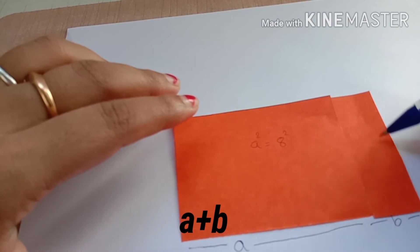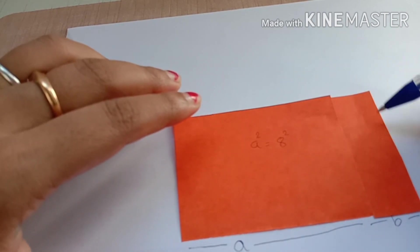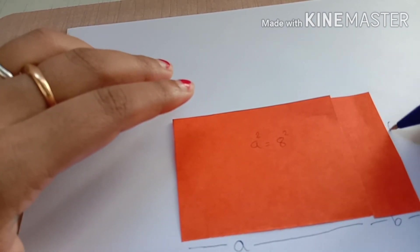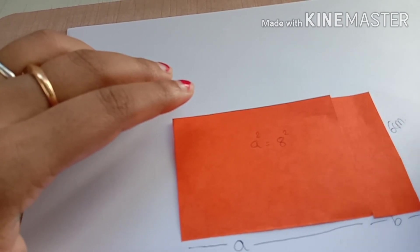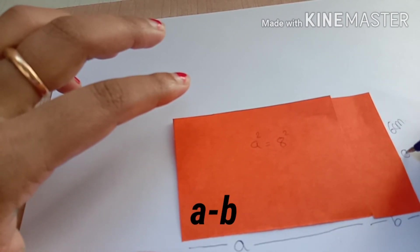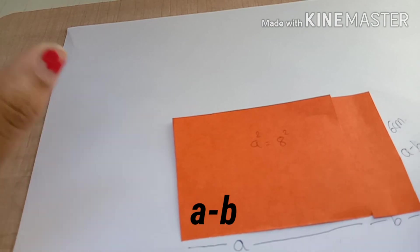And here the measurement of this side will be 6 centimeters. That's why I can write it as a minus b.